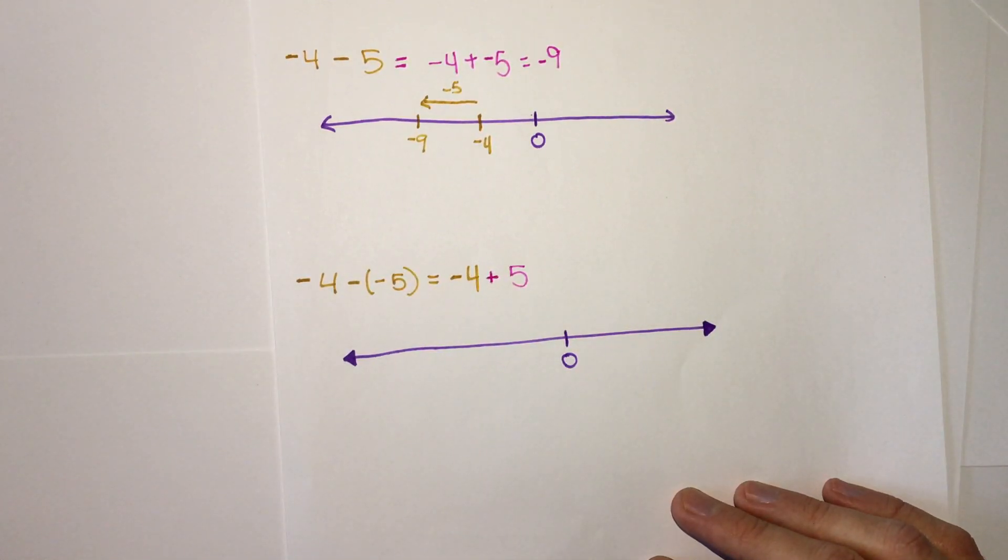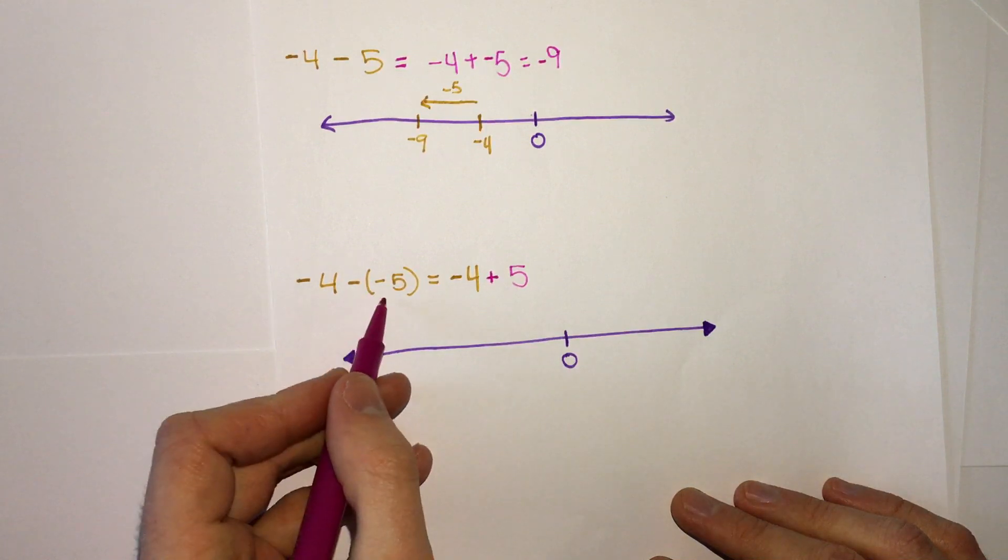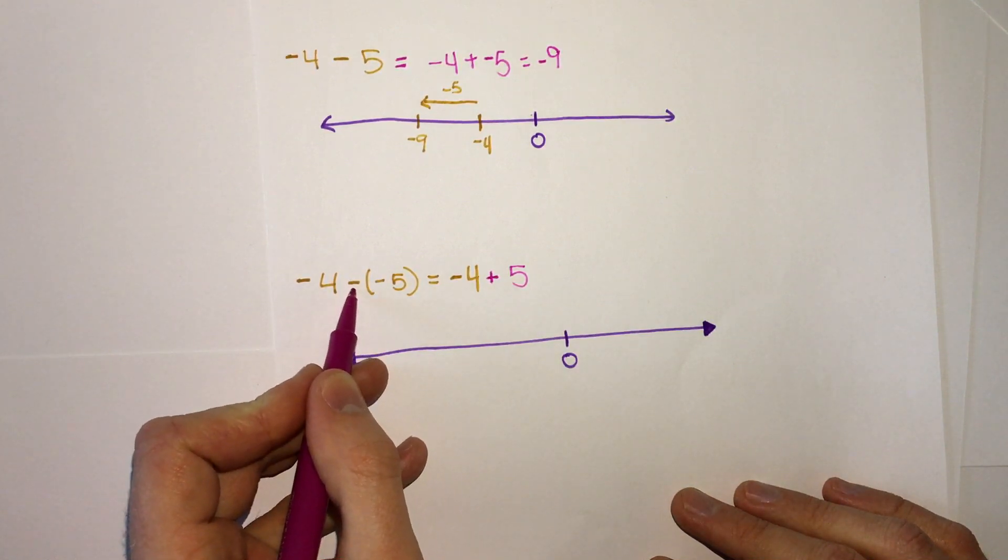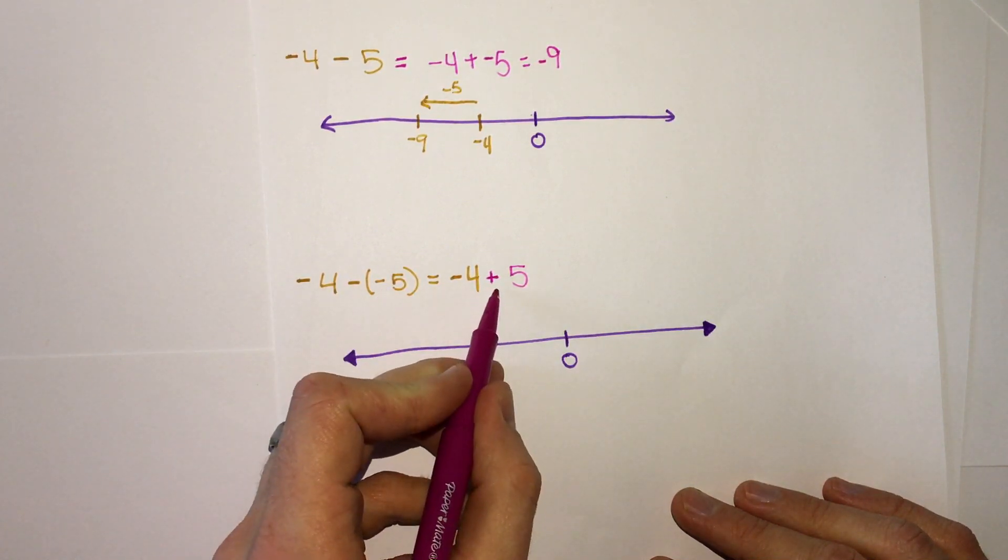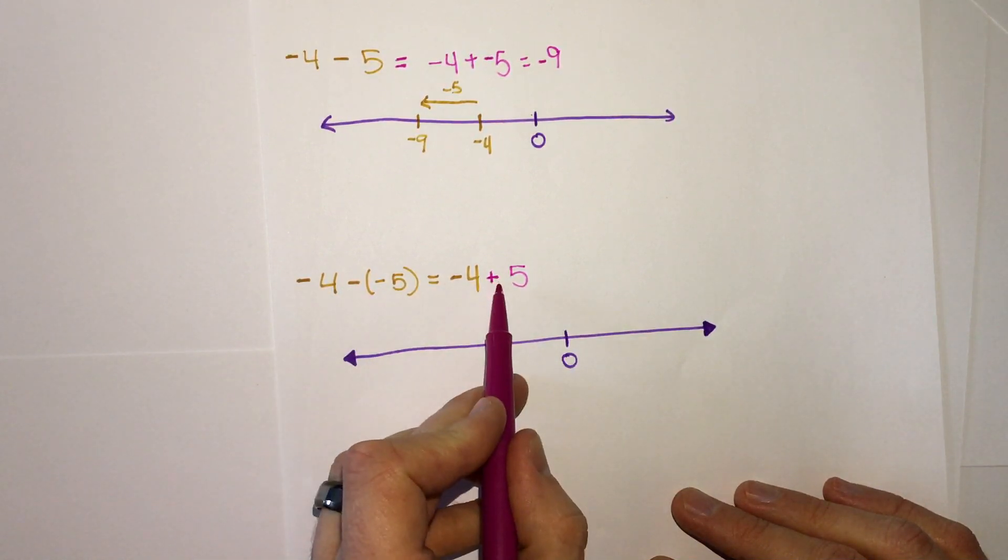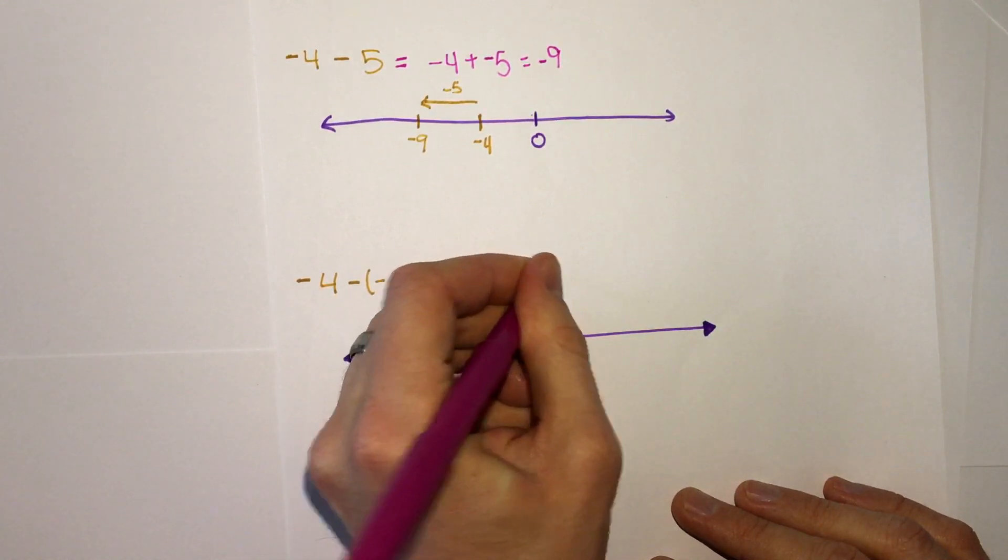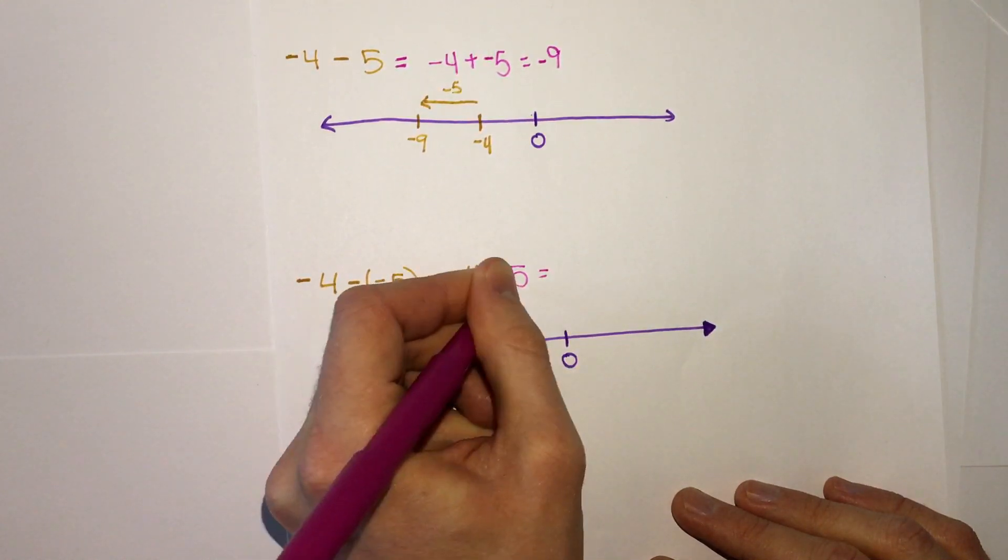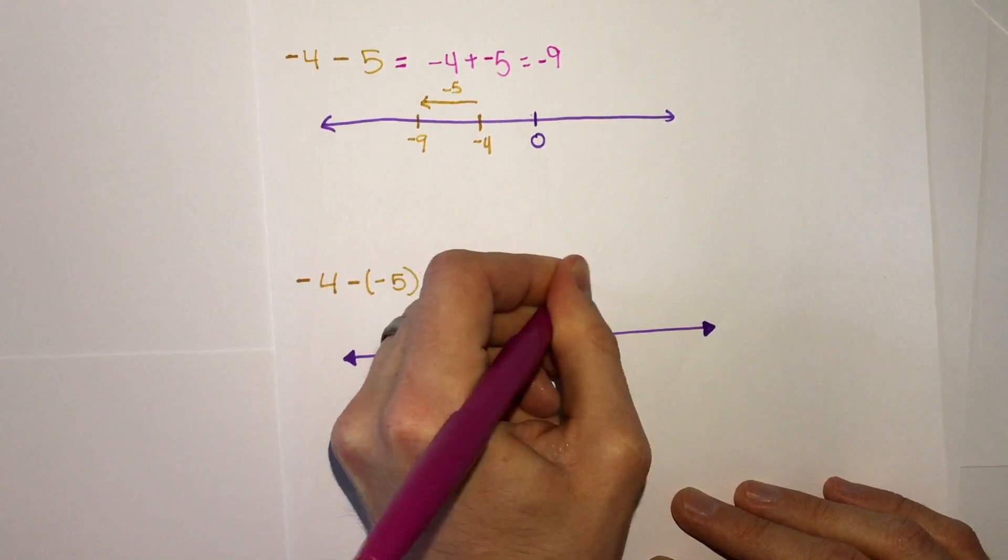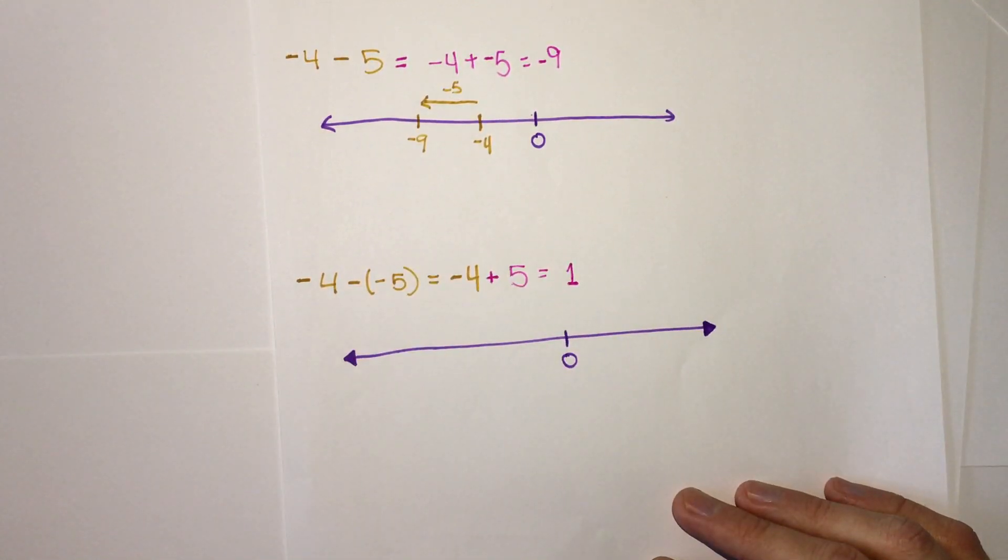So now we have negative 4 plus 5. You'll notice this, minus a negative number just became plus. That's always true. Minus a negative becomes addition. So negative 4 plus 5. 5 minus 4 is 1. The positive is bigger. So our answer is positive 1.